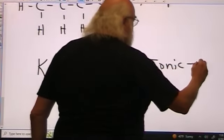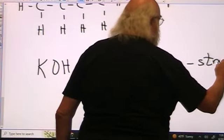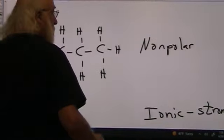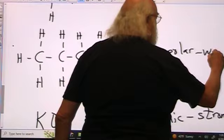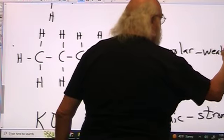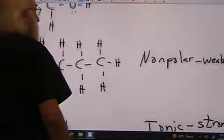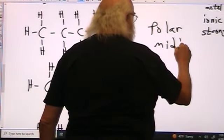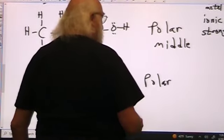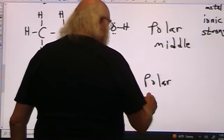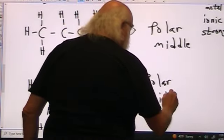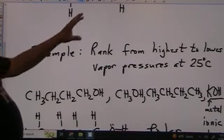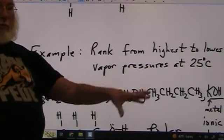So this is the strongest. This is the weakest of the intermolecular bonds. And these two are in the middle. Somewhere between weak, non-polar, and strong ionic.